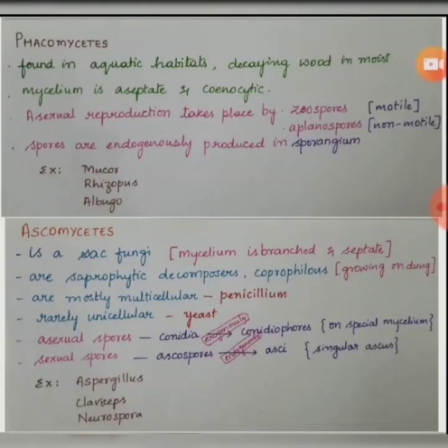Phycomycetes are fungi which are found in aquatic habitats or on decaying wood in moist places. Their mycelium is aseptate and coenocytic, and they reproduce by zoospores or planospores. Zoospores are motile while planospores are non-motile, and their spores are endogenously produced in a sporangium.